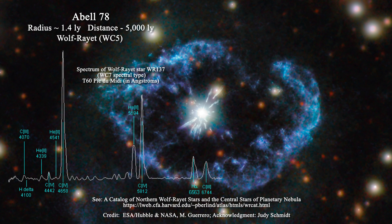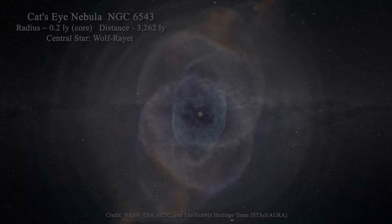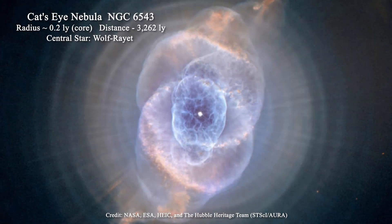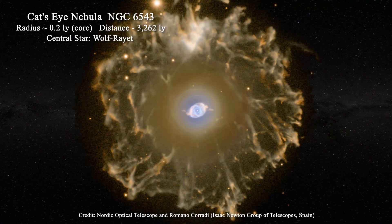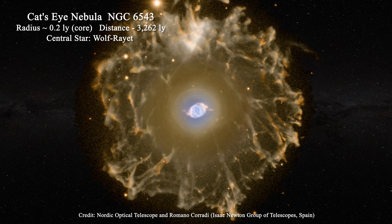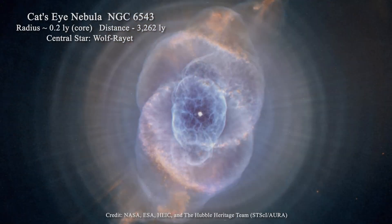We will return to Wolf-Rayet stars in much greater detail later this year. Consider the Cat's Eye Nebula — perhaps one of the most famous planetary nebulae — which has a Wolf-Rayet star at its center. In reality the Cat's Eye Nebula is much more extended than commonly shown. The outer portion of the nebula definitely appears to be the remnant of an explosion, but the central portion is orderly and highly structured.